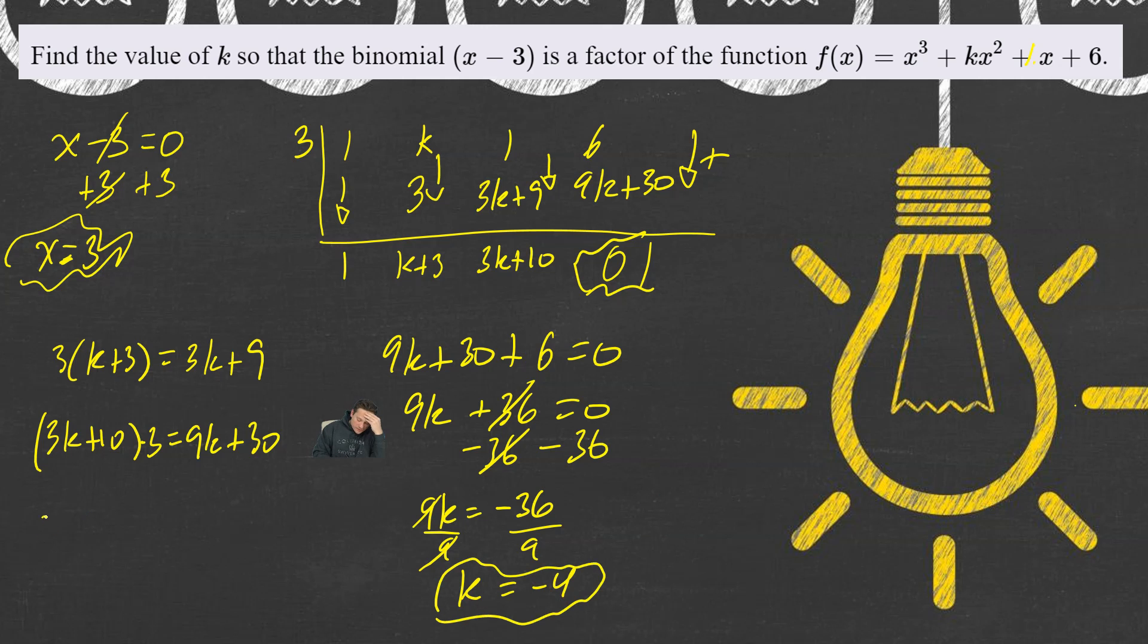I can say that I have the following function. f(x) equals x cubed minus 4x squared plus x plus 6. This is my function, and this function has x minus 3 as a factor. In other words, x equals positive 3 is a root.